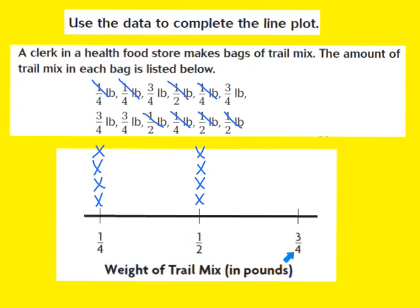Now I'll count the 3/4 pound bags. Here's 1 — cross out that 3/4 pound and place an X above the 3/4. Here's 2, 3, 4 — crossing each off and placing X's. There are 1, 2, 3, 4 three-fourths pounds in our data set, and now 1, 2, 3, 4 X's in our line plot. All of our numbers have been crossed off, meaning I've accounted for every number in the data set. Our line plot is now completed.